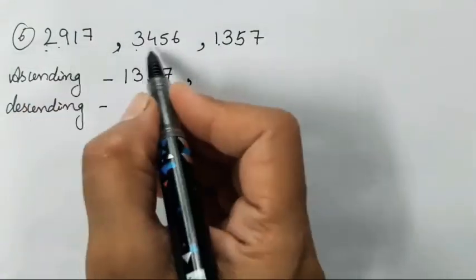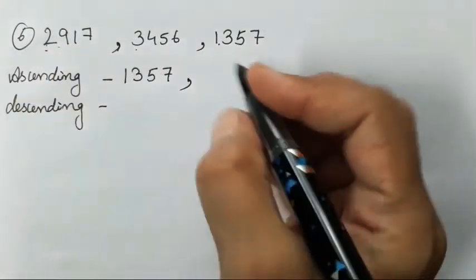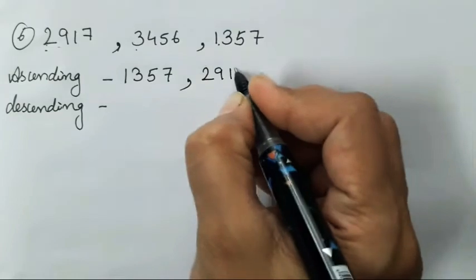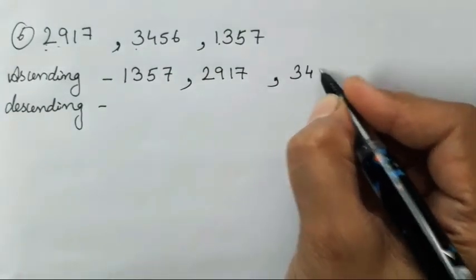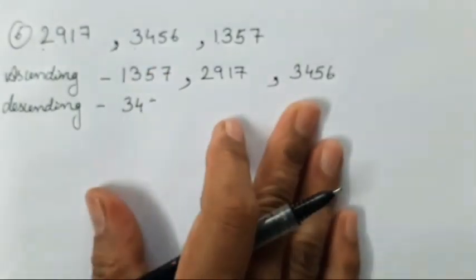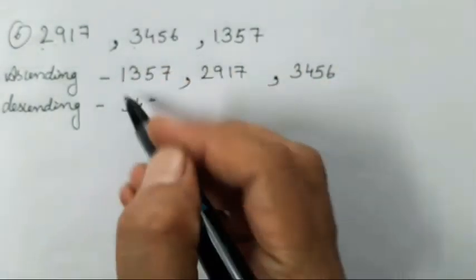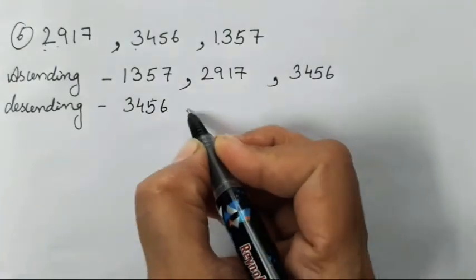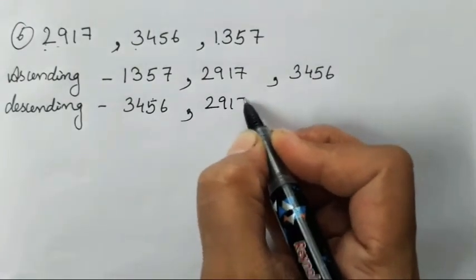Then between 2 and 3 which is going to be smaller? 2 is going to be smaller. So 2917. Easily we can write it. This is the easiest trick that I am showing you all children. No other trick you will find as easy as this one. 2917, 1357.